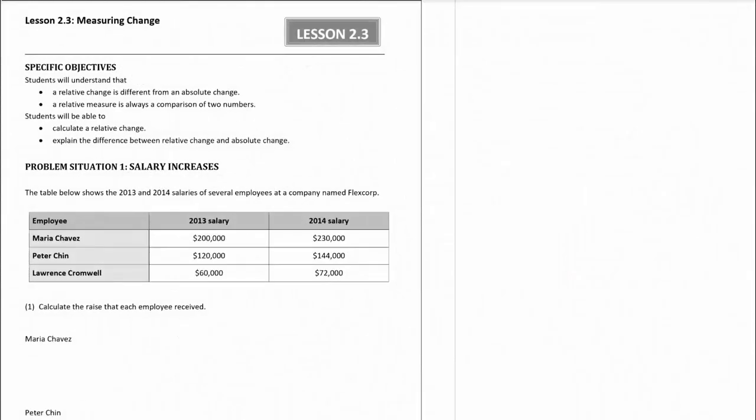Hello everybody, this is lesson 2.3: Measuring Change. Let's go ahead and read the specific objectives. In this lesson, students will understand that a relative change is different from an absolute change. A relative measure is always a comparison of two numbers. Students will be able to calculate relative change and explain the difference between relative change and absolute change.